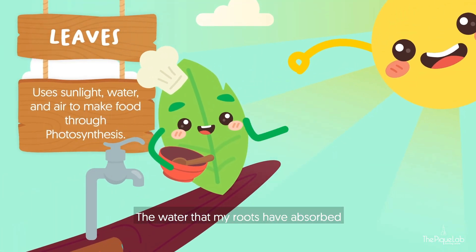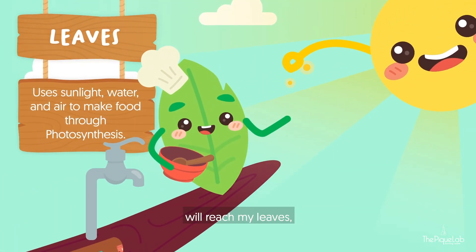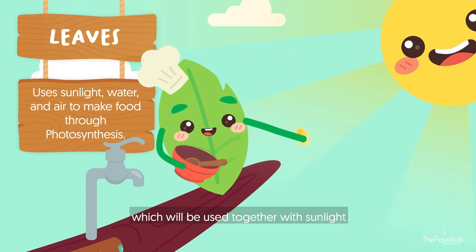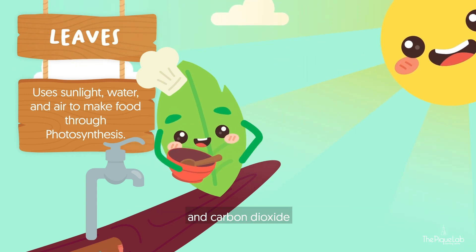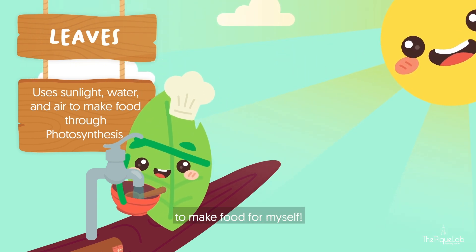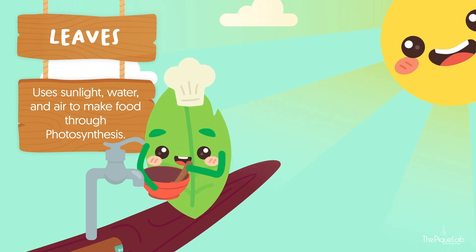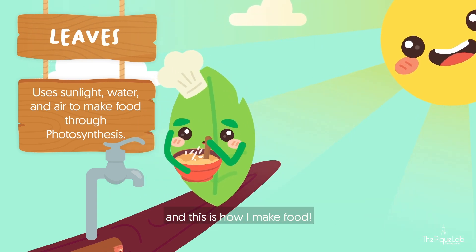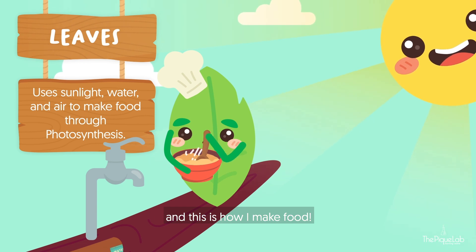The water that my roots have absorbed will reach my leaves, which will be used together with sunlight and carbon dioxide to make food for myself. This process is called photosynthesis, and this is how I make food.